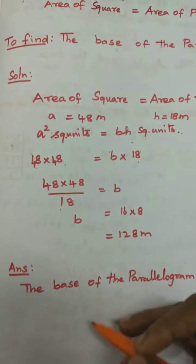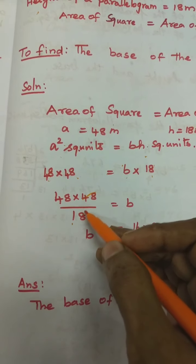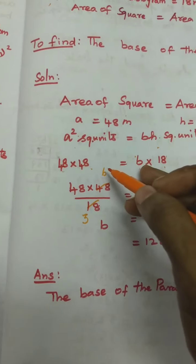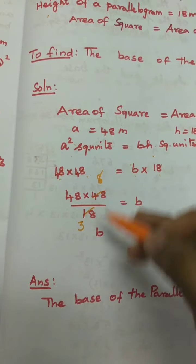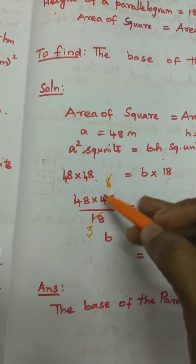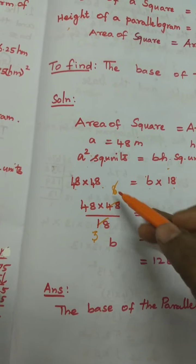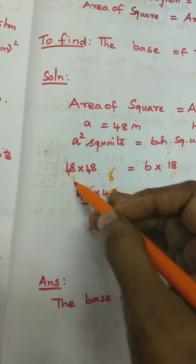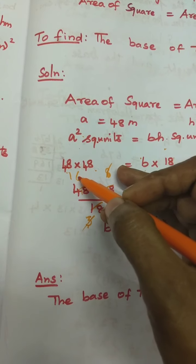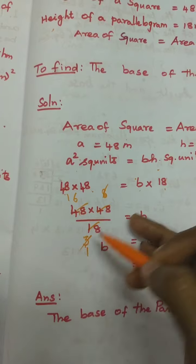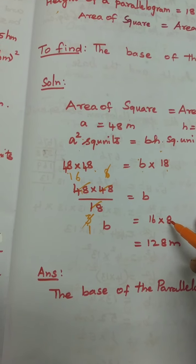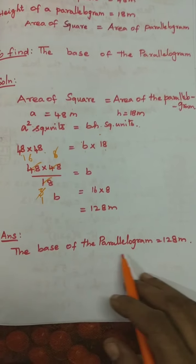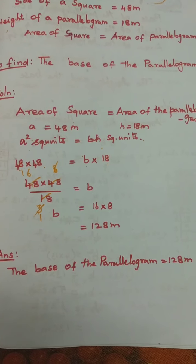Cancel 18 and 48: 6 threes are 18, and 6 eights are 48. Then cancel 3 and 48 further: 16 × 8. So B = 16 × 8 = 128 metres. The base of the parallelogram is equal to 128 metres.